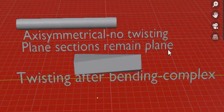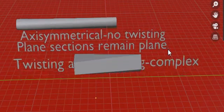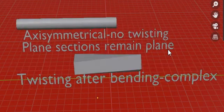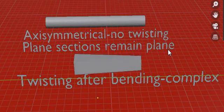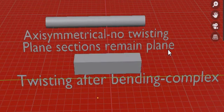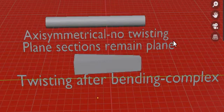A key assumption for deriving the torsion formula is axisymmetry, so the circular bar is axisymmetric, while the rectangular bar is not.